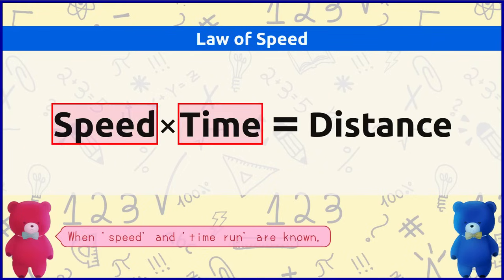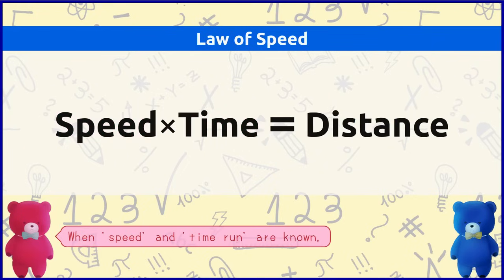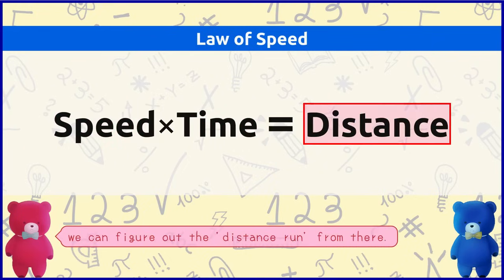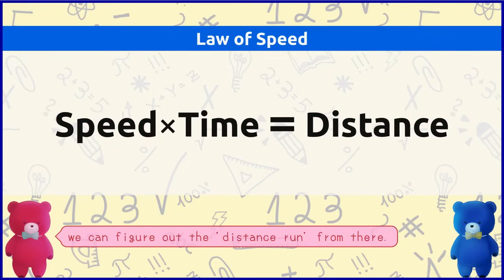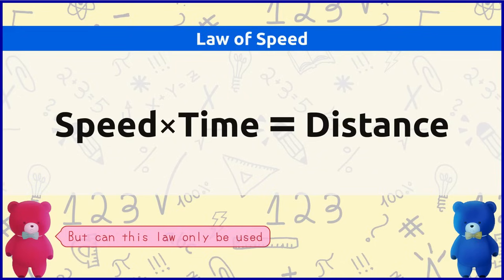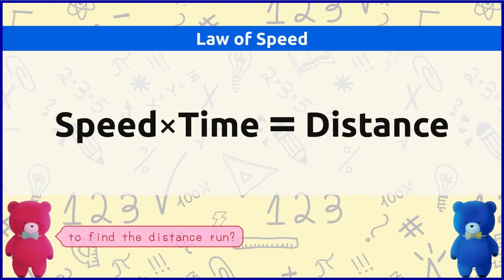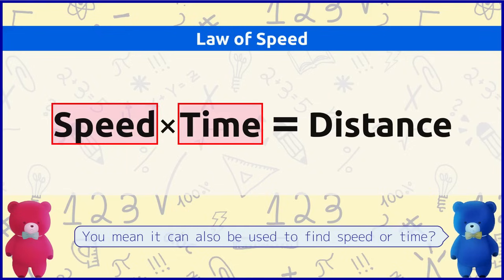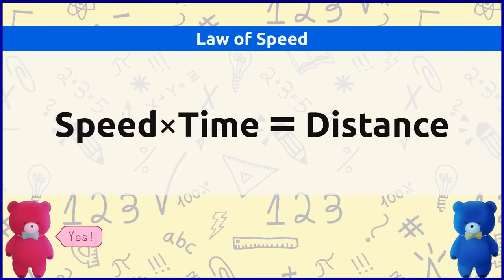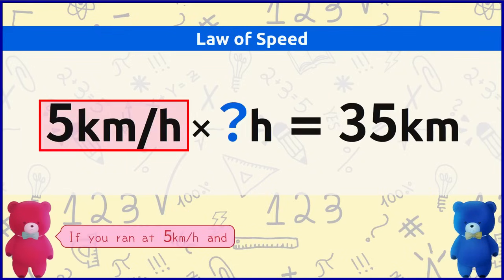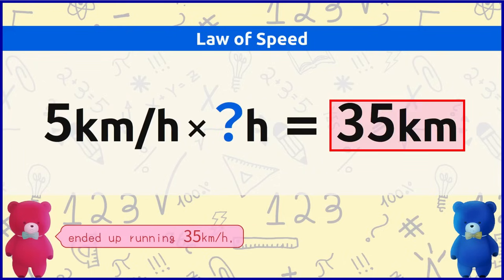When speed and time run are known, we can figure out the distance run from there. But can this law only be used to find the distance run? It can also be used to find speed or time. If you run at 5km per hour and ended up running 35km.